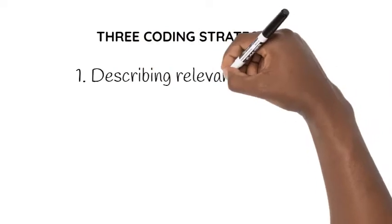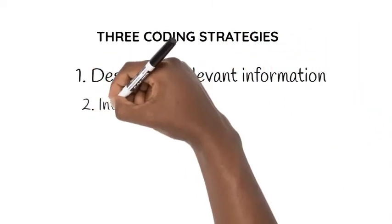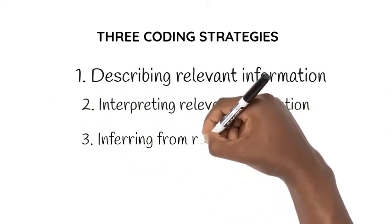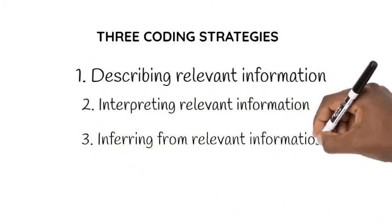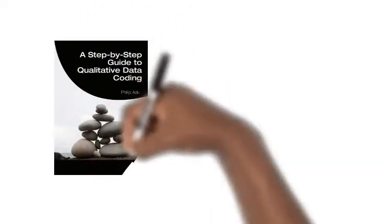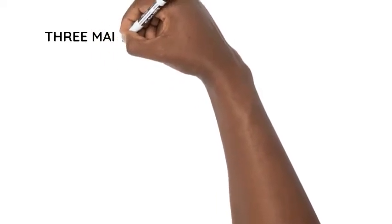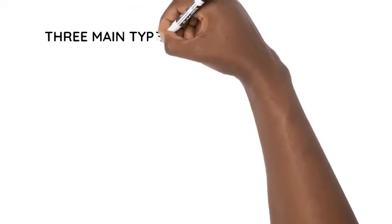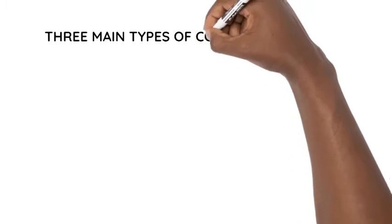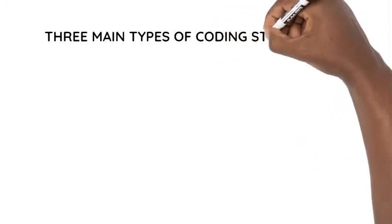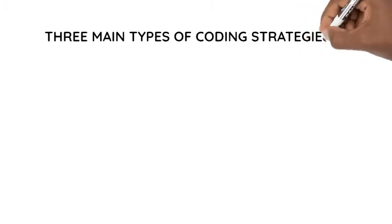These are the three strategies of coming up with codes. You can use one of them when you are doing the coding process. In my book, which is a step-by-step guide to qualitative data coding, I came up with three main types of coding strategies that you use to come up with codes that will address or indirectly address your research question.